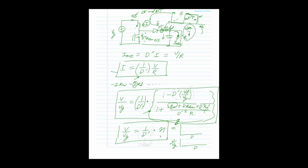As a sanity check, setting all parasitics to zero (R_W = 0, R_DS(on) = 0, R_D = 0) makes the efficiency term equal to 1, and V/V_G reduces to the ideal 1/D' — exactly as expected. The ideal component is 1/D' and the efficiency component is η.